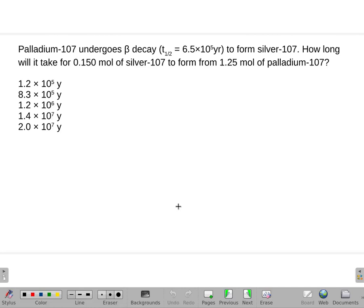Palladium-107 undergoes beta decay with a half-life of 6.5 × 10^5 years. It forms silver-107. How long would it take for 1.15 moles of silver-107 to form from 1.25 moles of palladium?